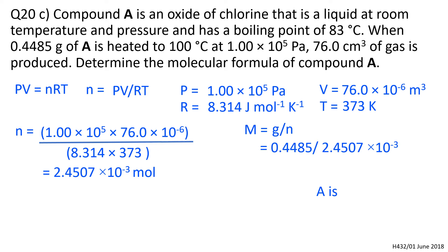That's a rearrangement of n equals mass divided by molar mass, so that gives us those numbers. The 0.4485 is the mass of A, and that gives us that molar mass of 183.0 g mol⁻¹.